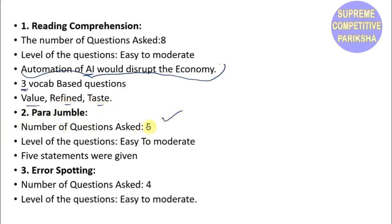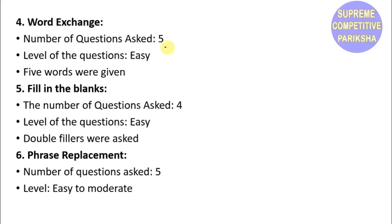Para Jumble had 5 questions with easy to moderate level. Error Spotting had 4 questions with easy to moderate level. Word Exchange had 5 questions with easy level where 5 words were given. Fill in the Blanks had 4 questions with easy level where double fillers were asked.